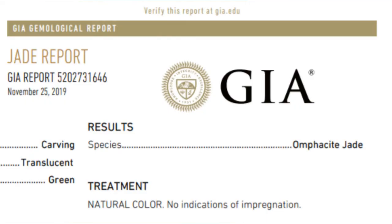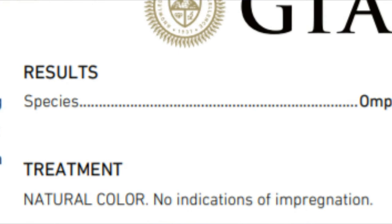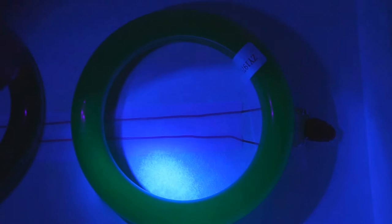So now we'll take a look at the GIA report for this carving right here. As you can see, natural color, no indication of polymer impregnation. And then I didn't even bother sending this $5 bangle for a GIA report because it's so obviously blatantly treated.